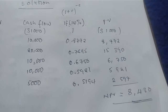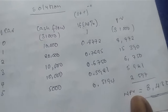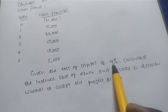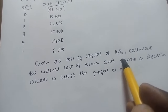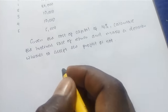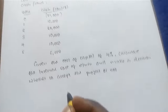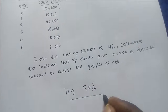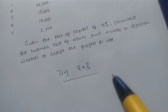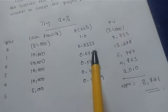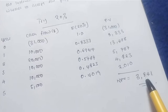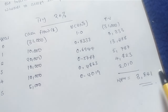Let's begin the trial and error approach. We will try a higher rate because at 14% we got a positive NPV. So I would try using 20% — it's trial and error, so let's try 20% and see what net present value we get. Using 20%, I still get a positive net present value.